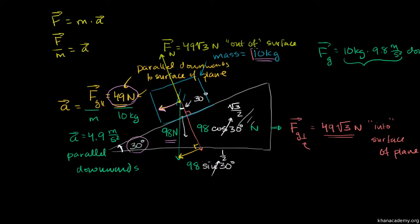In the last video, we had a 10 kilogram mass sitting on top of an inclined plane with a 30 degree angle. In order to figure out what would happen to this block, we broke down the force of gravity on this block into the components that are parallel to the surface of the plane and perpendicular to the surface of the plane. For the perpendicular component, we got 49 times the square root of 3 newtons downwards.